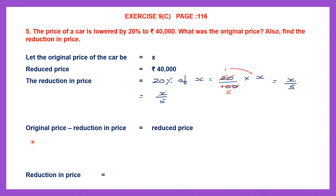That is, original price minus reduction in price equals reduced price. The original price is x, reduction in price is x by 5, and this should give me the reduced price of 40,000 rupees. Now we have to calculate x minus x by 5.